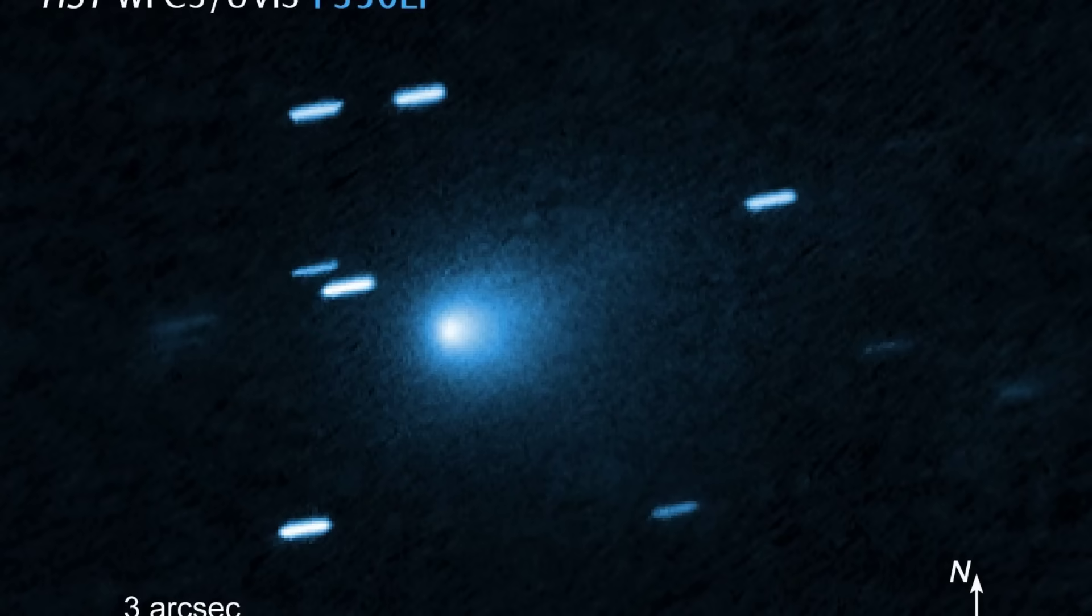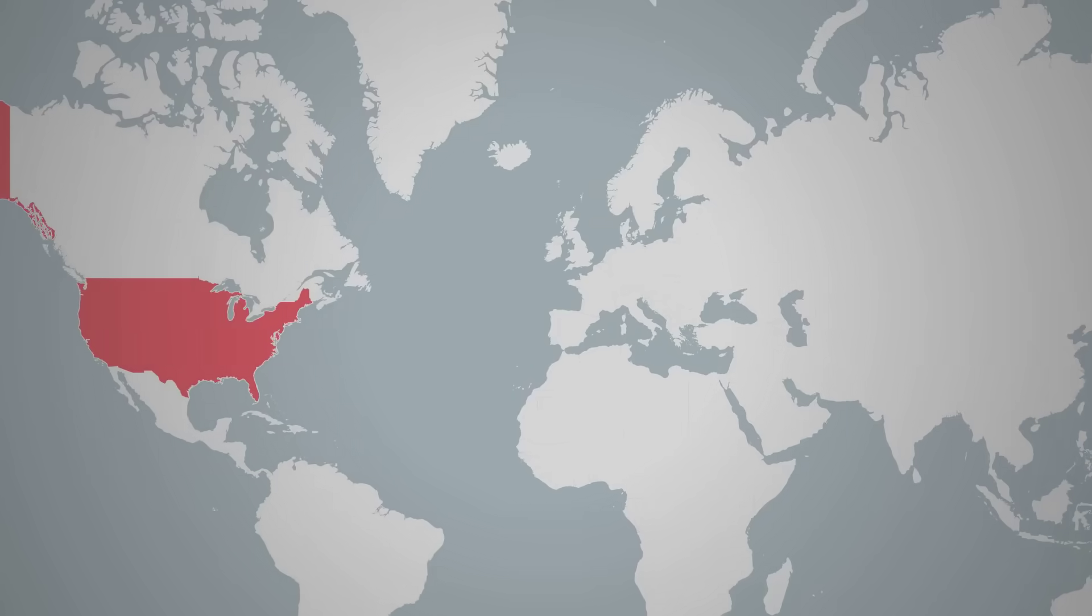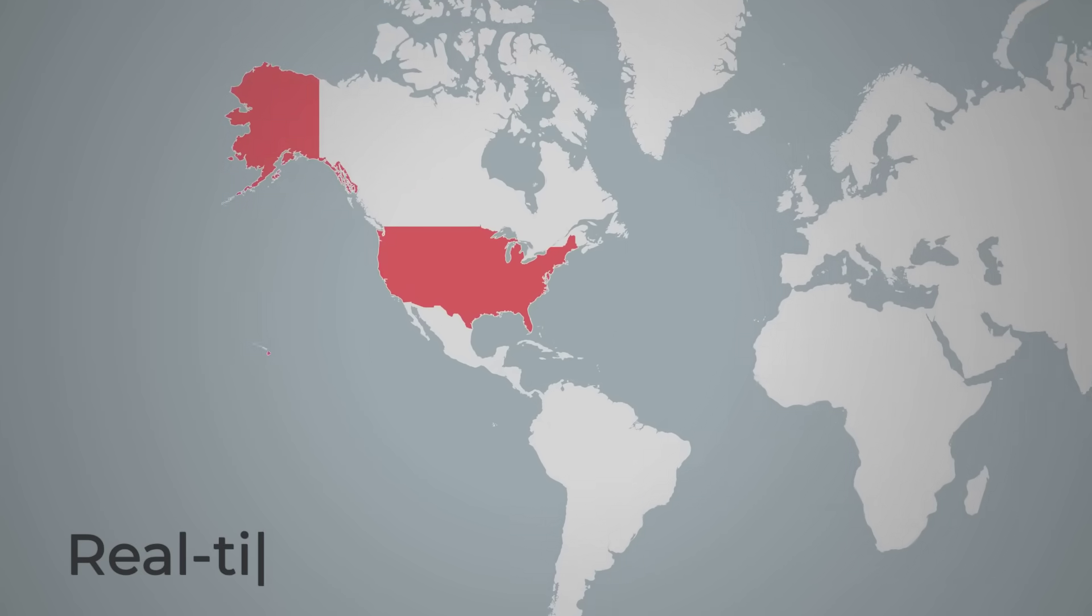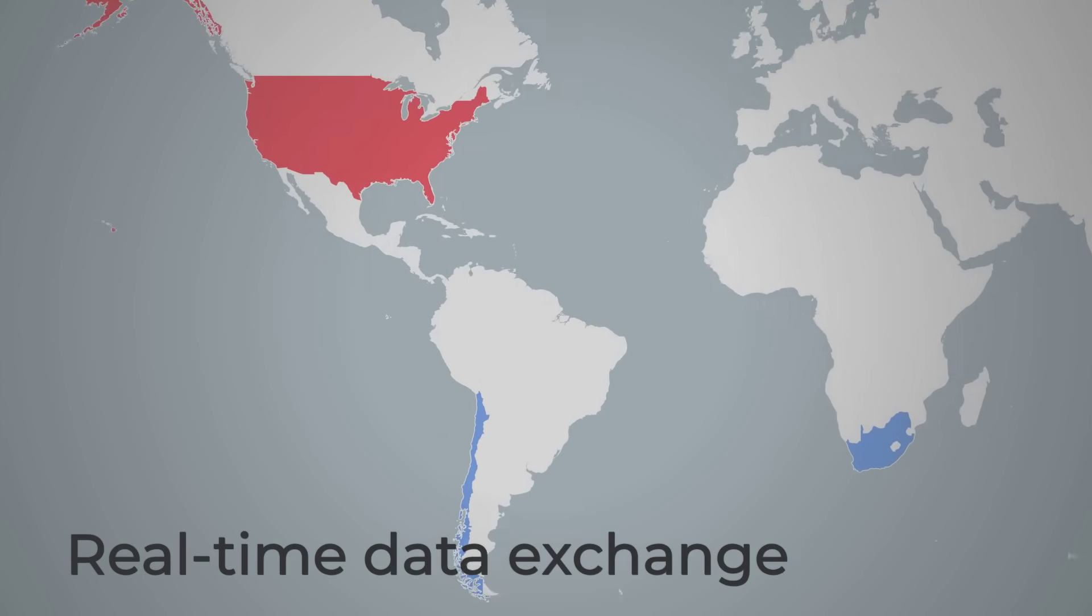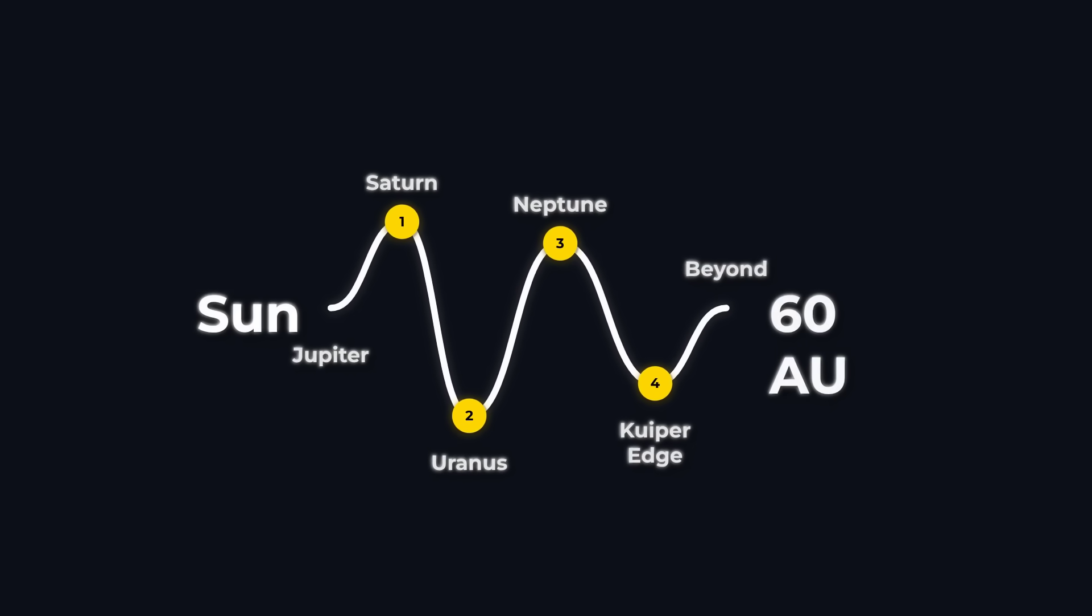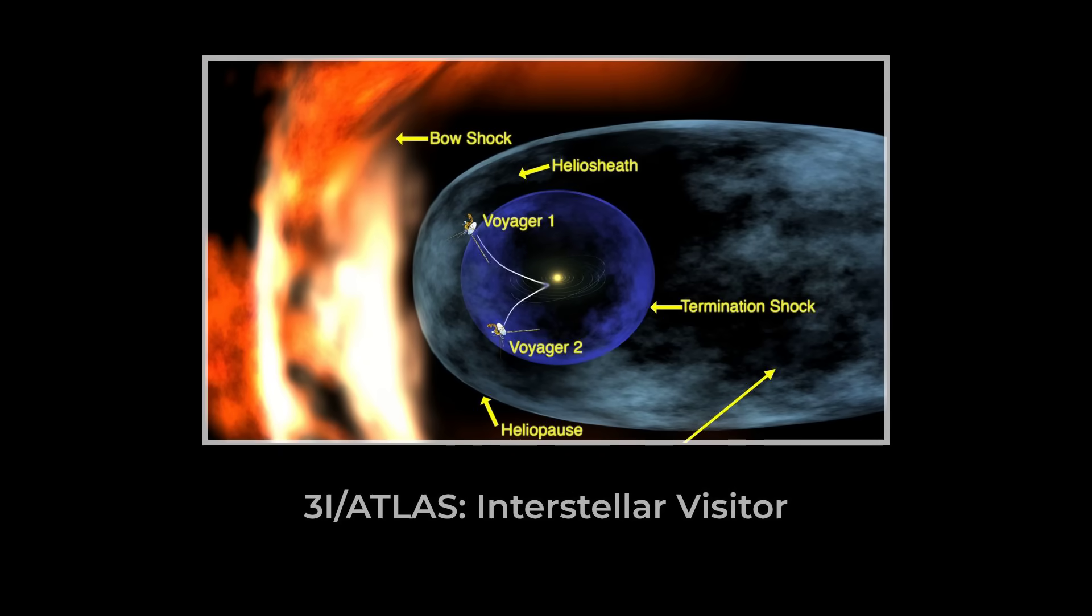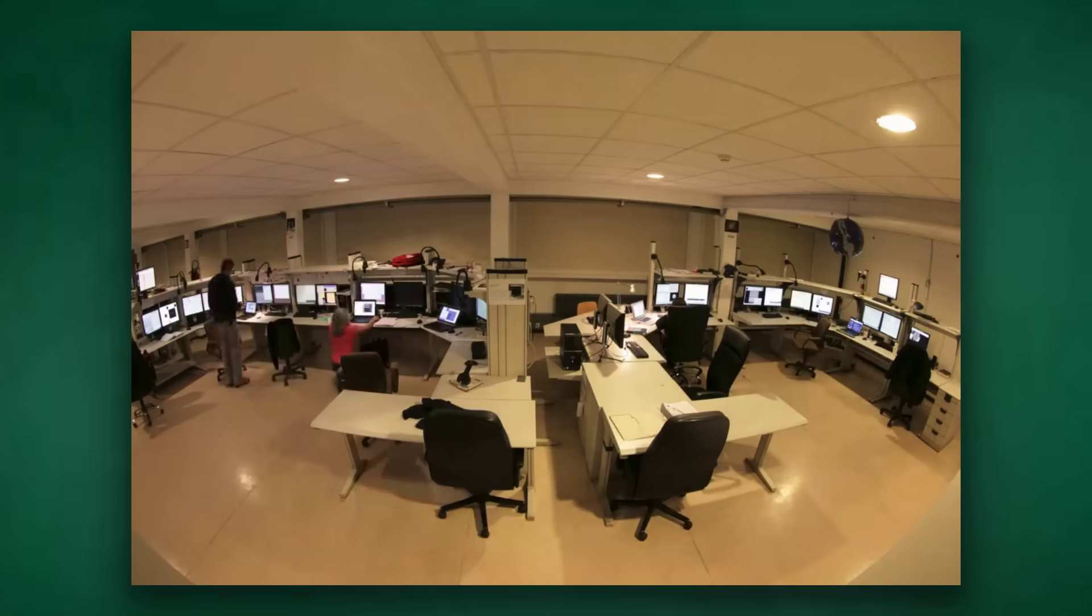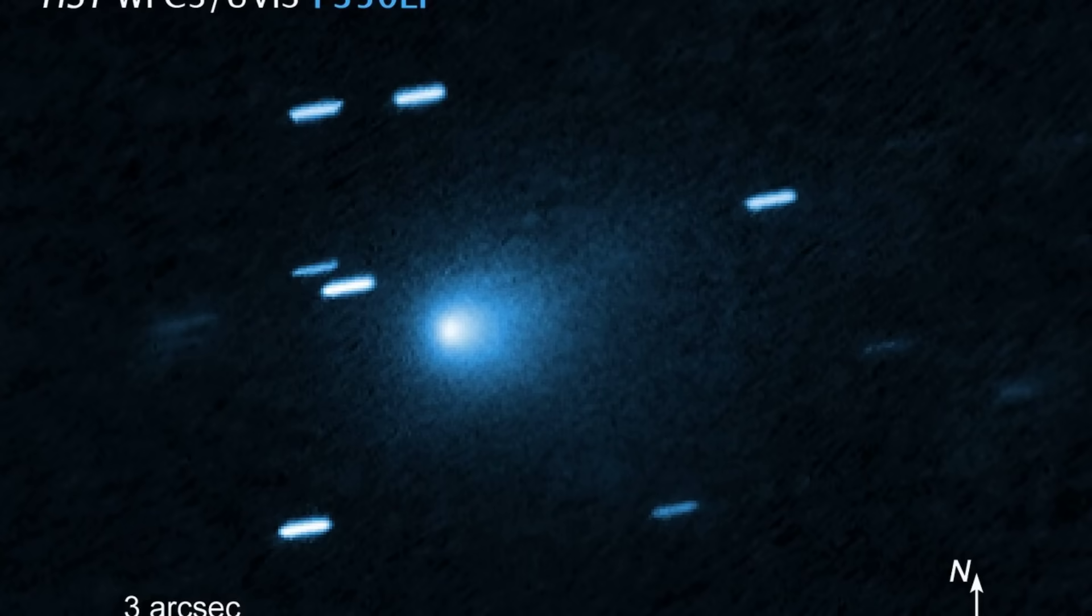ATLAS's automated pipeline, designed for planetary defense, was now at the center of a cosmic chase. Teams in Hawaii, South Africa, and Chile compared notes, uploading astrometric data in real time. The object's preliminary orbit didn't just cross the outer planets. It came from deep space, on a one-way trip through the solar system. Astronomers scrambled to lock down its trajectory, knowing the sun would soon hide it from view.